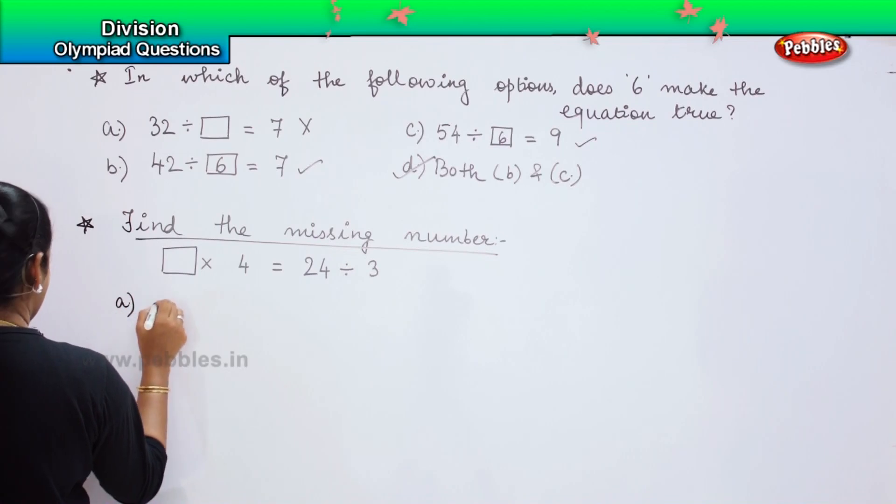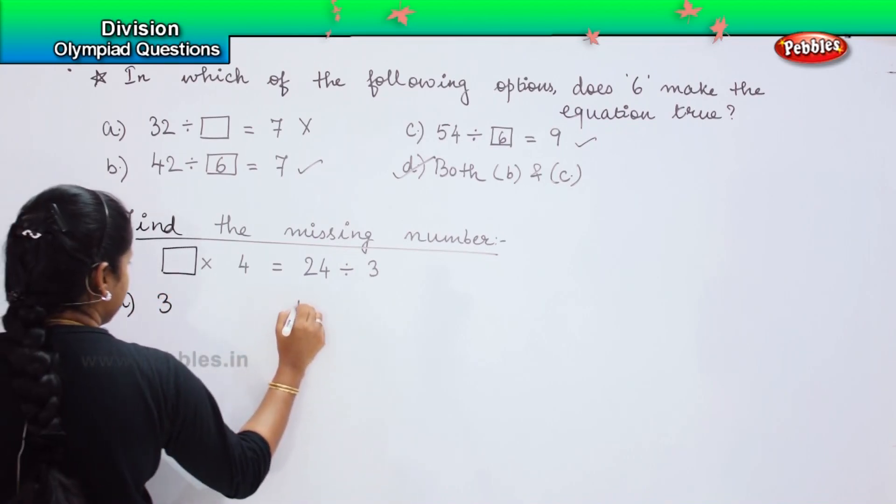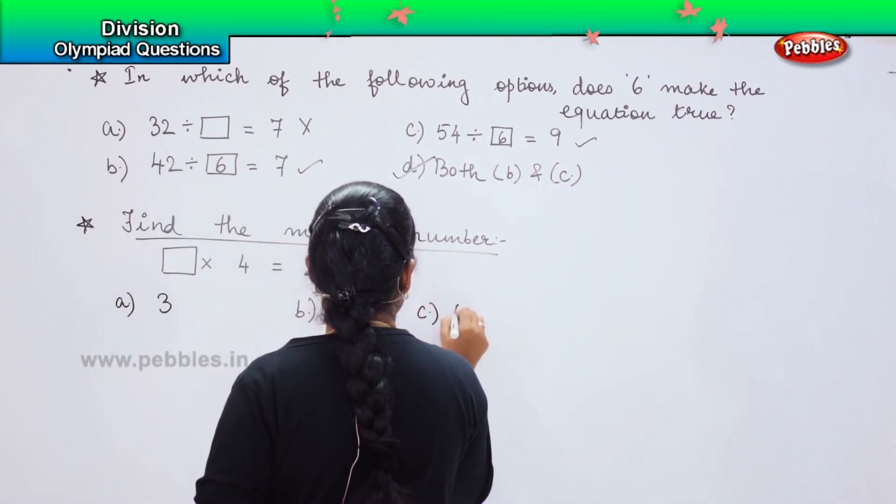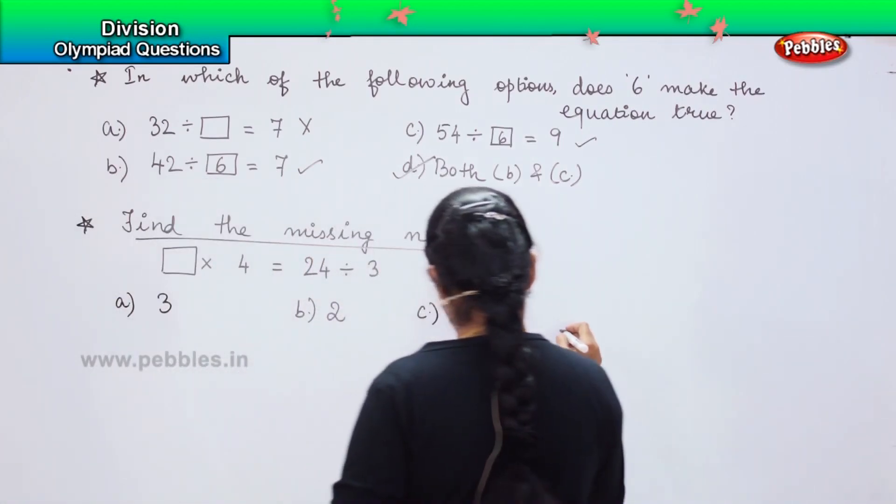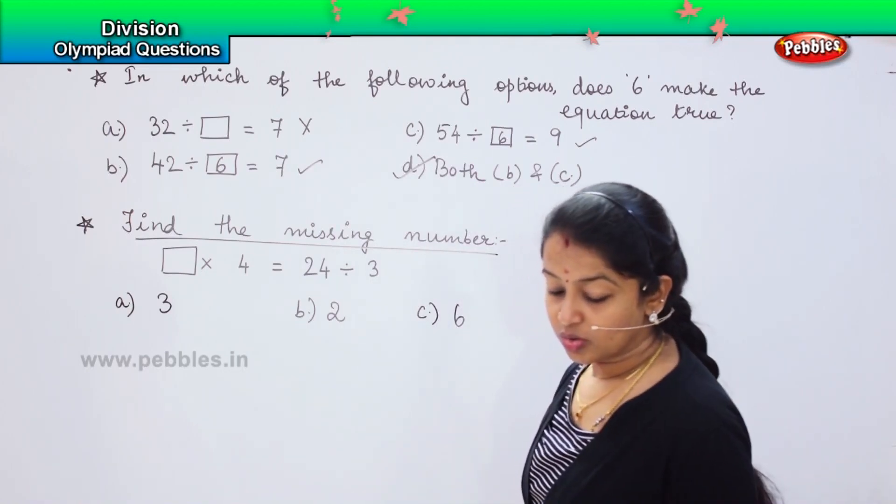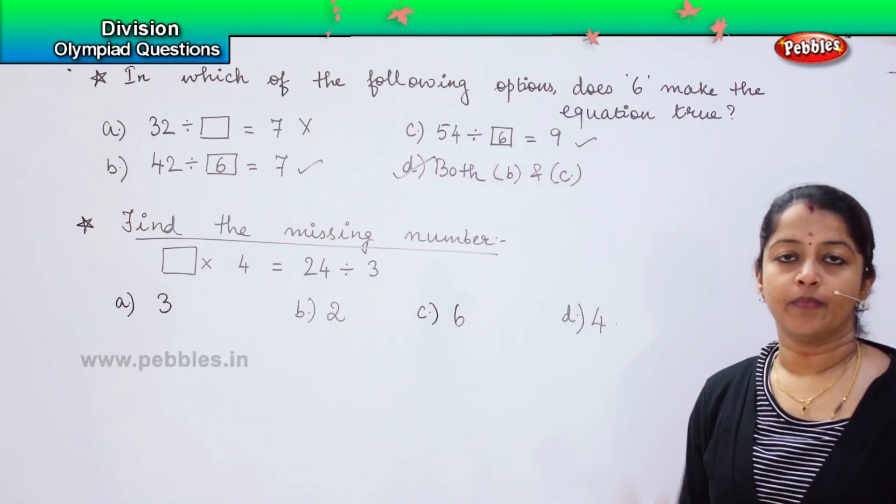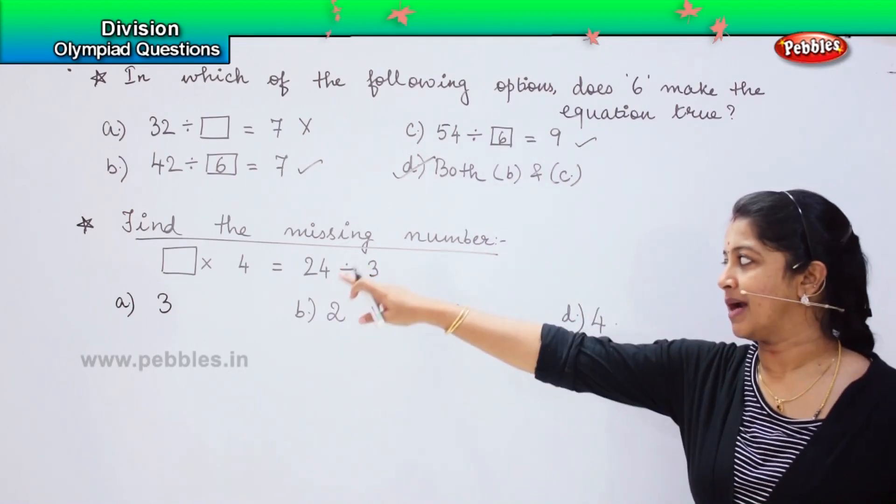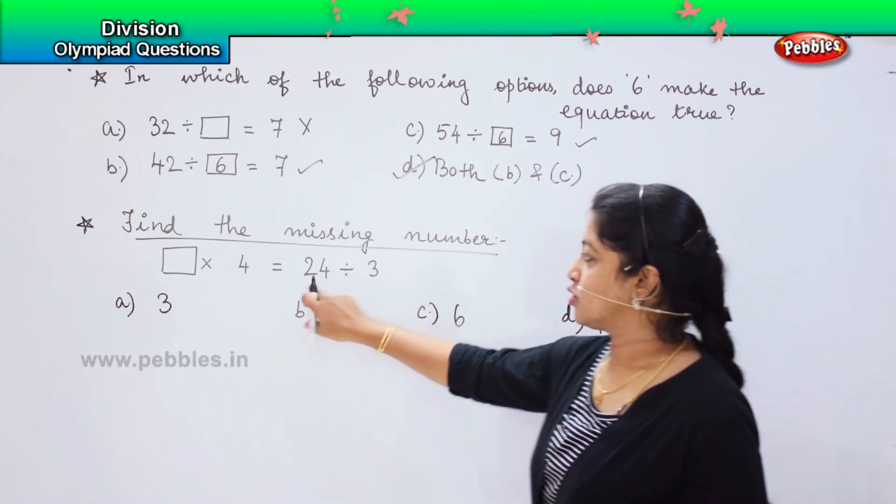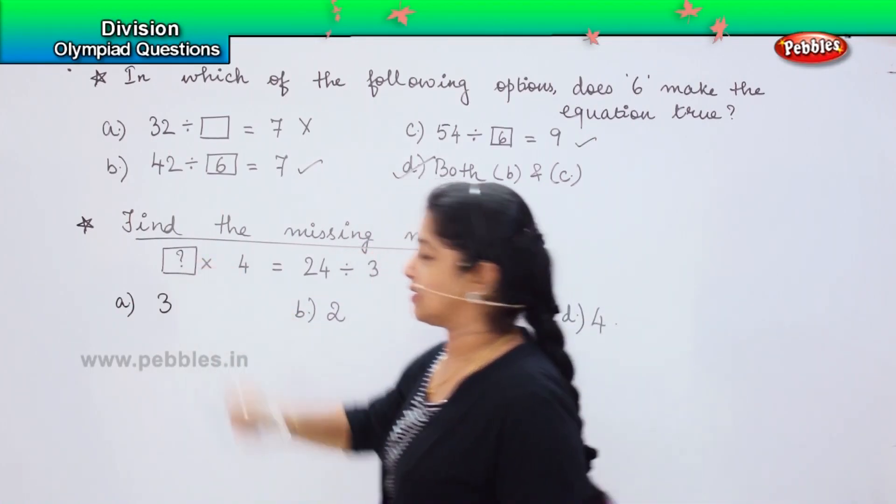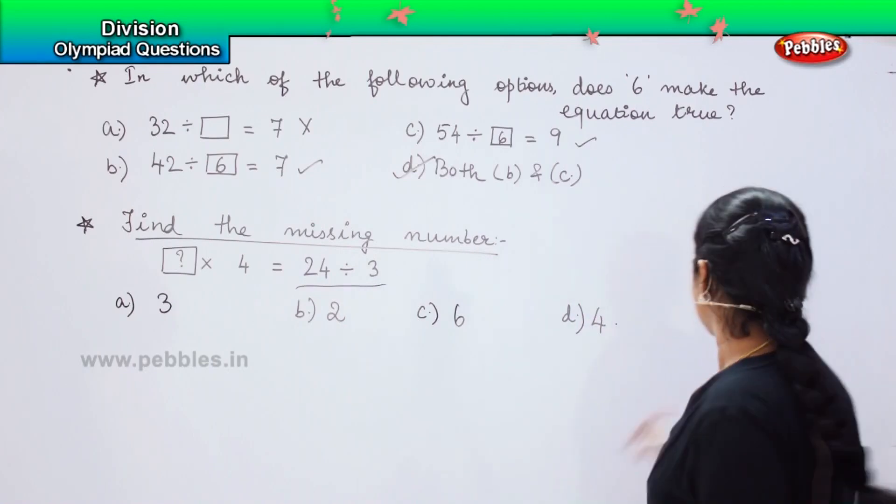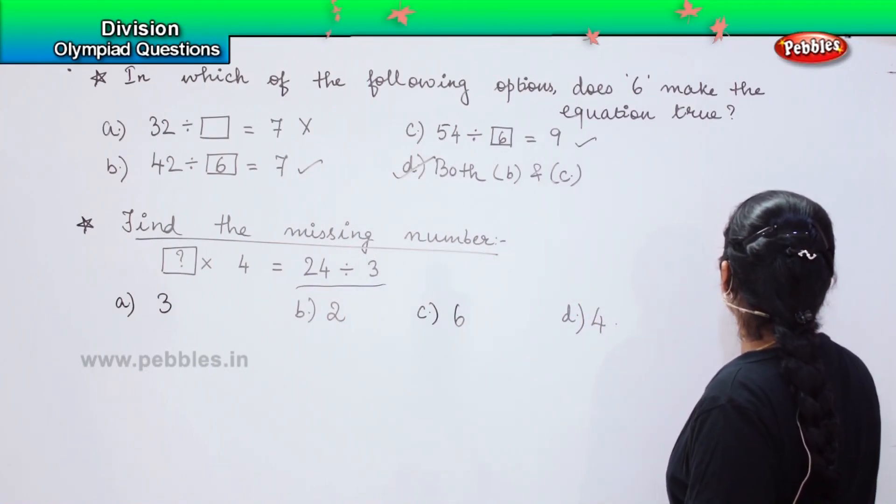Your question is something into 4 equals 24 divided by 3. And your answer are option A is 3, option B is 2, option C is 6 and option D is 4. In this question also we need to perform two operations. One is the multiplication and the second one is the division. First we will try to solve this because here we do not know what is the answer. First we will try to solve the division part.